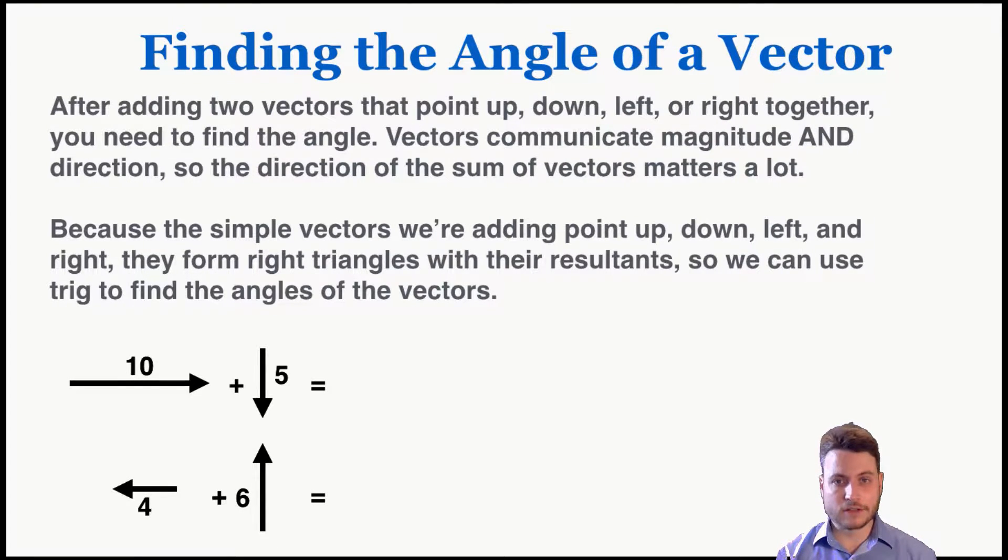Right now we're just adding simple vectors that point up, down, left, and right, and they form right triangles with their resultants. So we can use trig to find the angles of the vectors because trigonometry helps us understand angles and their relationship to right triangles.